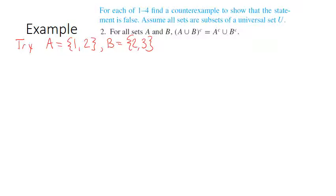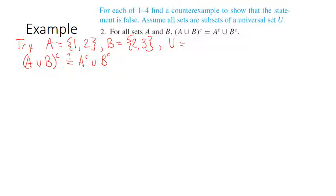I'll check whether the equation is true or not, writing a question mark over the equal sign. We need a universal set, so let's make it U = {1,2,3}. Now I'll fill in my choices for A and B and calculate each side. The union on the left side gives {1,2,3}. On the right-hand side, the complement of {1,2} is {3}, and the complement of {2,3} is {1}.